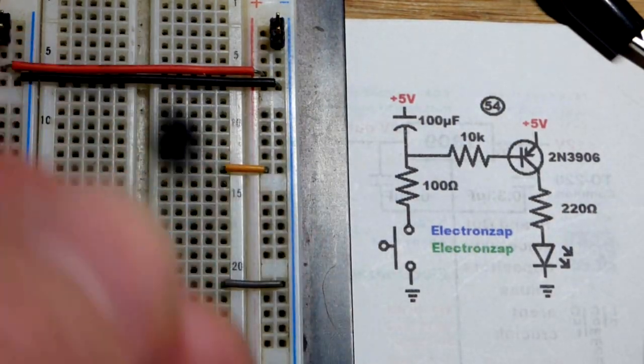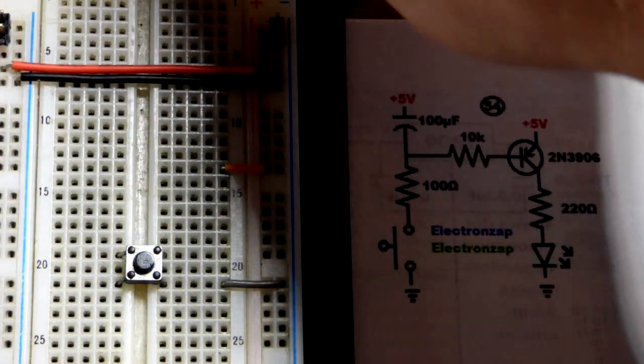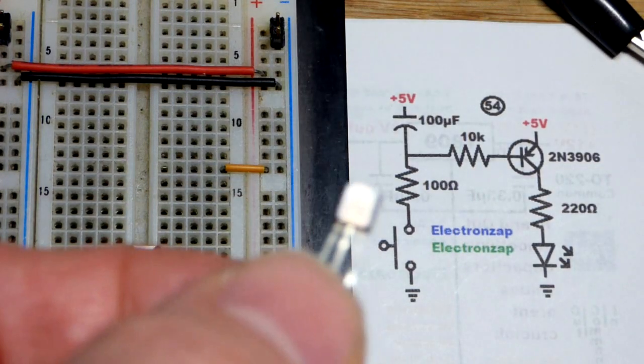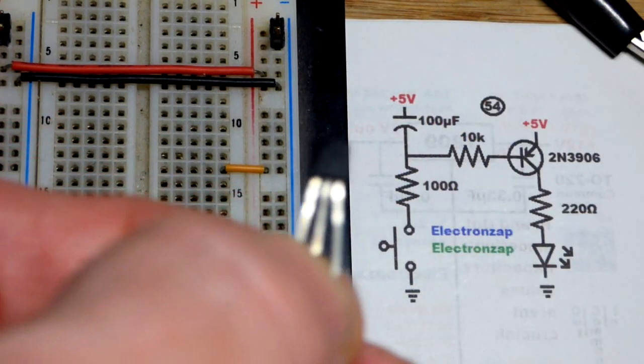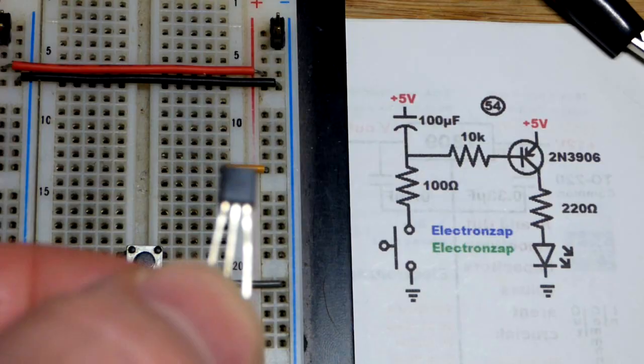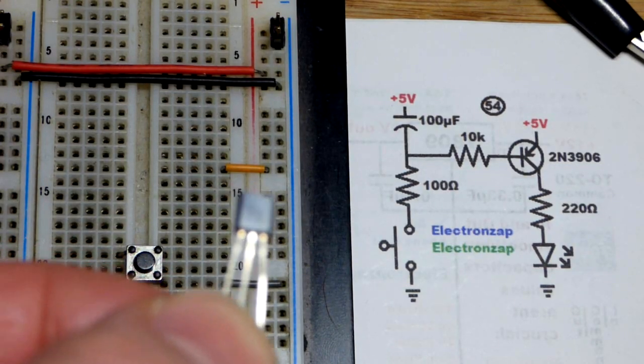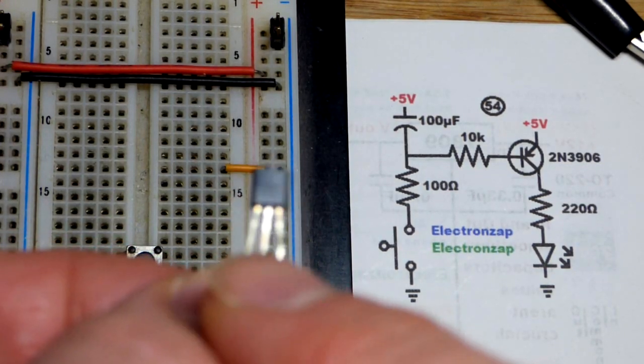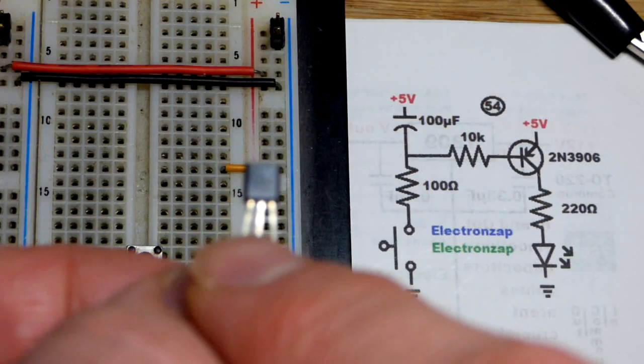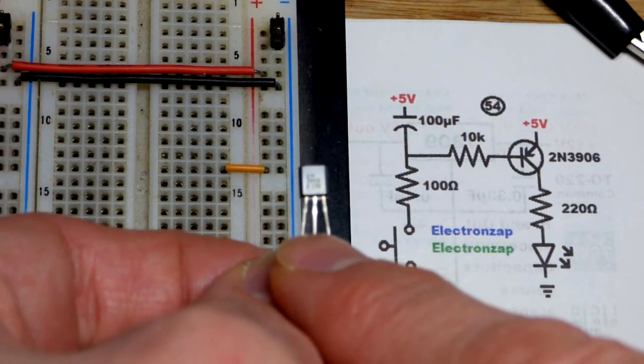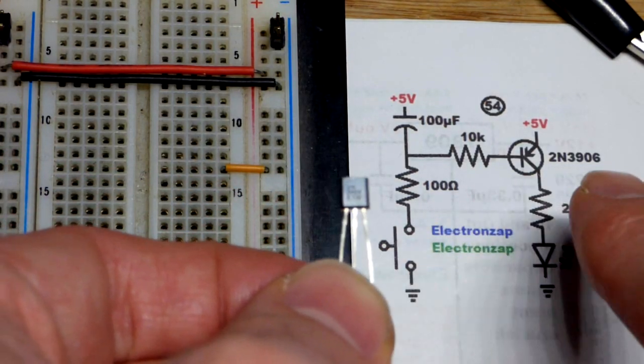Pretty straightforward right there. Since it's a bipolar junction transistor, and the part starts with 2N, because there's other bipolar junction transistors and there's other parts that start with 2N that aren't bipolar junction transistors, but because of the combination, left pin is the emitter, middle pin is the base, right pin is the collector.